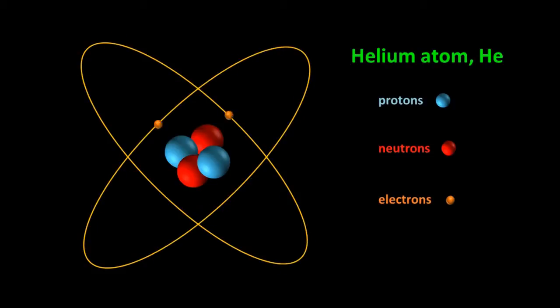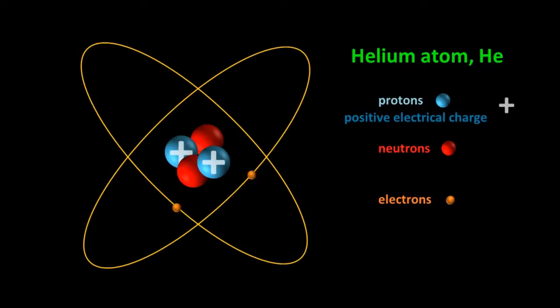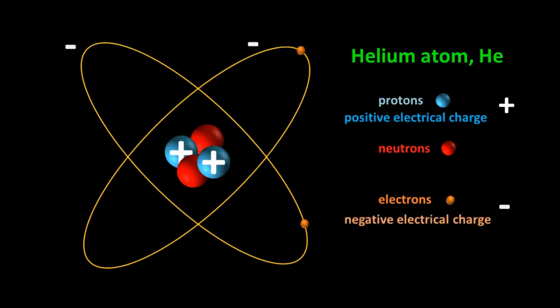We can't actually see any of these particles, and in this animation they're not drawn to scale. The protons have a positive electrical charge, and the electrons have a negative electrical charge. The neutrons are neutral.